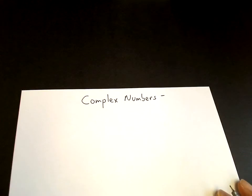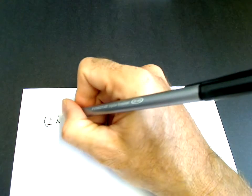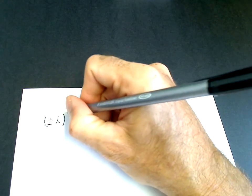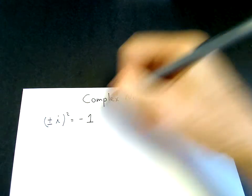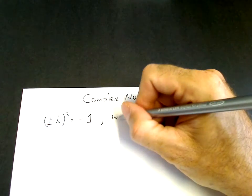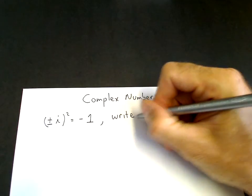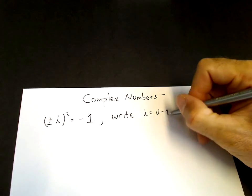This video will teach you the basics about complex numbers. We introduce an imaginary number, i, such that plus and minus i squared solves the equation x squared equals minus 1. Symbolically, we write i equal to the square root of minus 1.